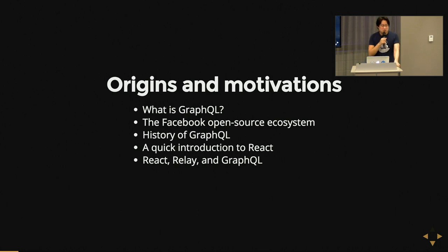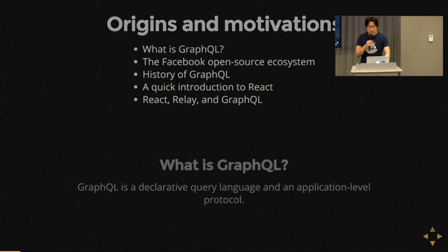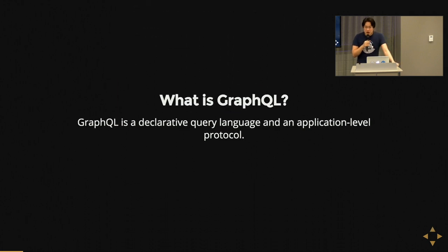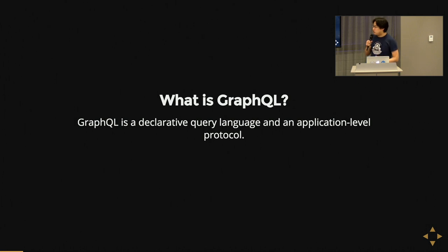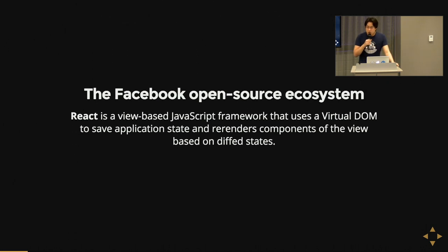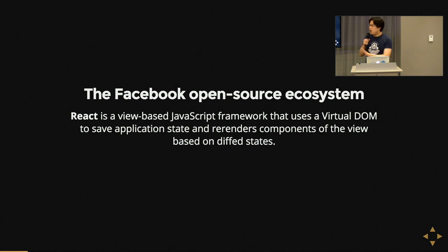So, what is GraphQL? GraphQL, simply put, is a declarative query language and an application-level protocol. To understand what that actually means, let me talk about the Facebook open-source ecosystem just to get our feet wet in what all these people are actually talking about.